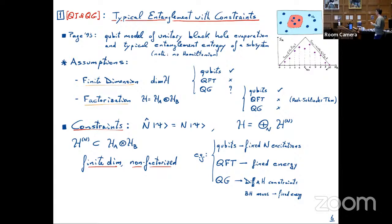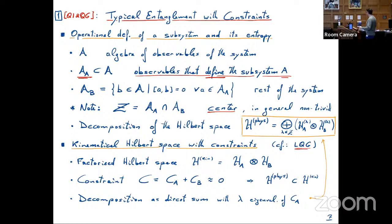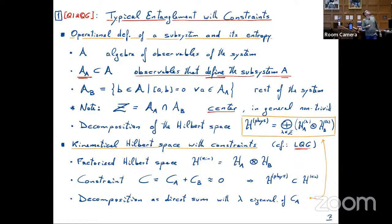The next two slides are technical but relate to something we discussed this week. The first perspective is operational: when you look at a subsystem, you can characterize it by saying, what measurements do you make? You define the subsystem by the subalgebra of observables. When you do that, you notice that the rest of the system is everything that commutes with the subalgebra. In general, there's an intersection — a center. When that happens, you have a decomposition. It's not a tensor product, but it's a direct sum of tensor products.